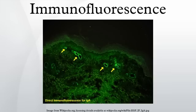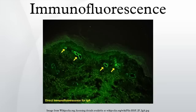Secondary, or indirect, immunofluorescence uses two antibodies. The unlabeled first antibody specifically binds the target molecule, and the secondary antibody, which carries the fluorophore, recognizes the primary antibody and binds to it. Multiple secondary antibodies can bind a single primary antibody, providing signal amplification by increasing the number of fluorophore molecules per antigen. This protocol is more complex and time-consuming than the primary protocol, but it allows more flexibility because a variety of different secondary antibodies and detection techniques can be used for a given primary antibody.